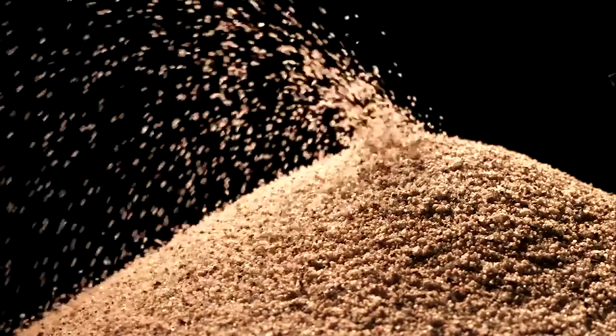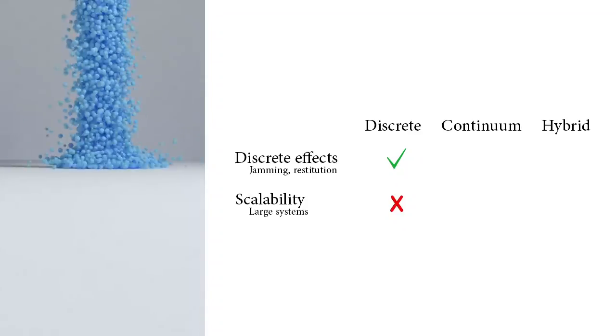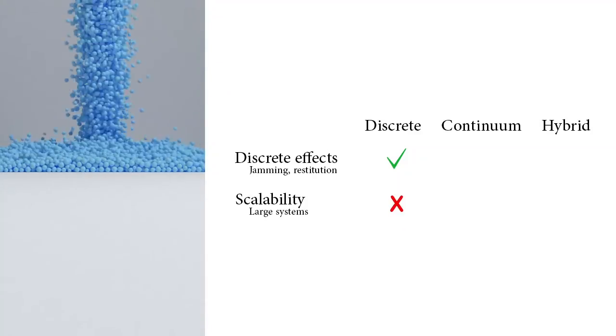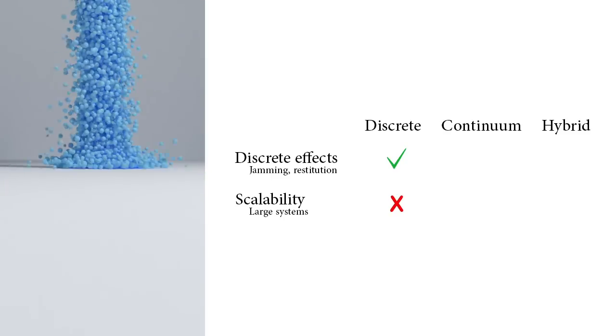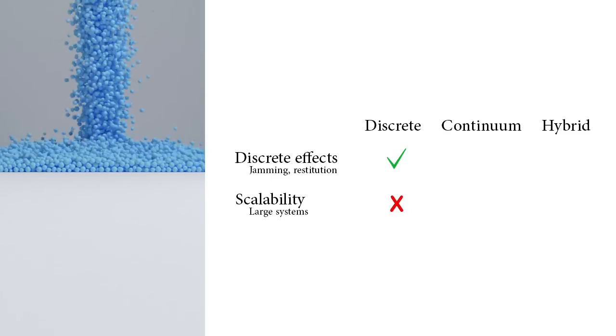Granular materials are challenging to simulate because they are multiscale and multiphase in nature. Discrete methods predict the interactions of individual grains as they pack, clog, bounce, and roll, but discrete methods don't scale to large numbers of grains.